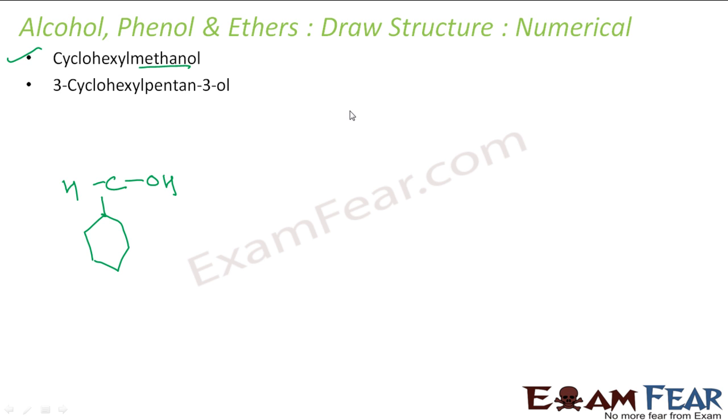3-cyclohexylpentan-3-ol. Let's draw pentane first. Meth, eth, prop, but, pent. 1, 2, 3, 4, 5. At third position there is a cyclohexyl group. Right? Cyclohexyl group. This is done. This part is done.